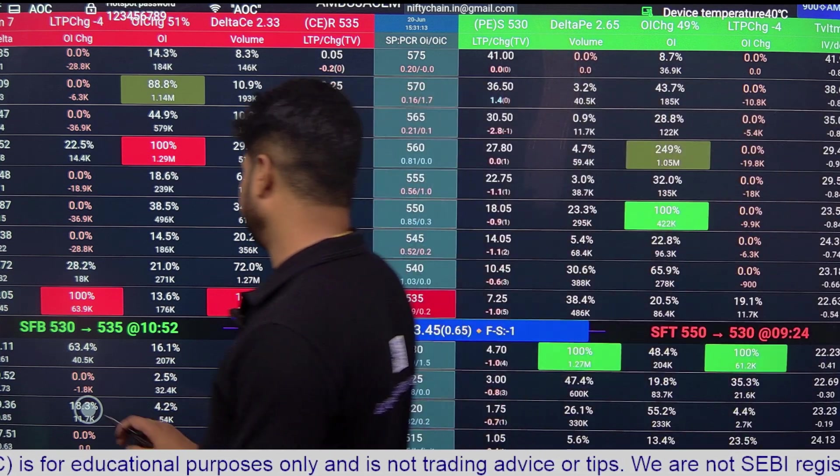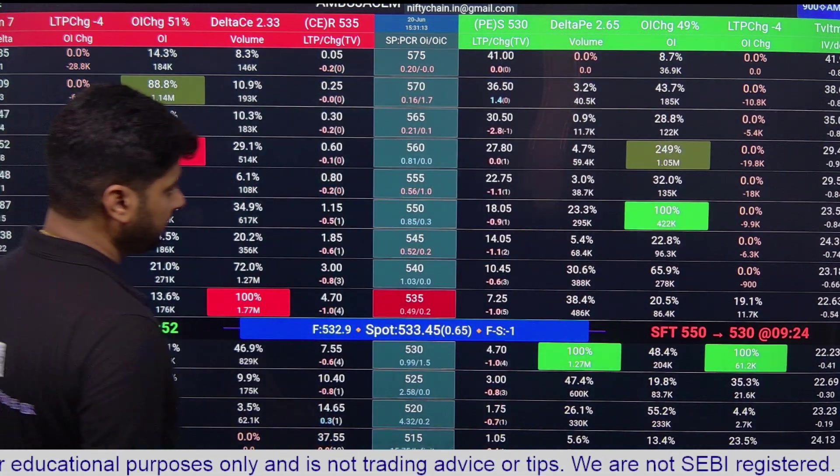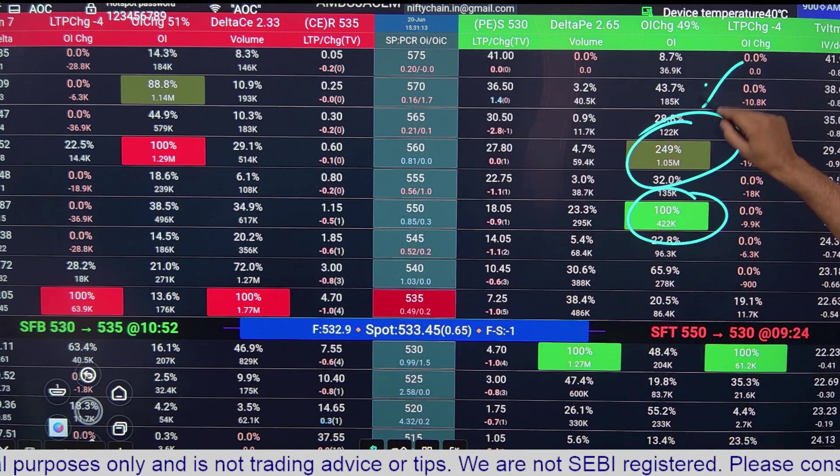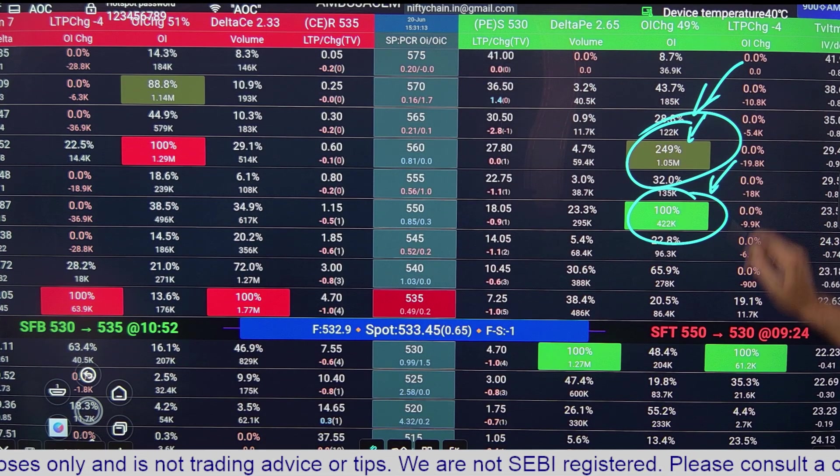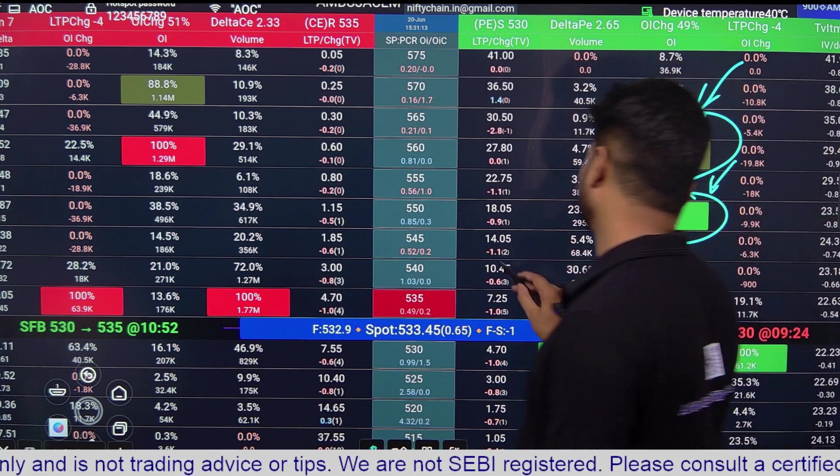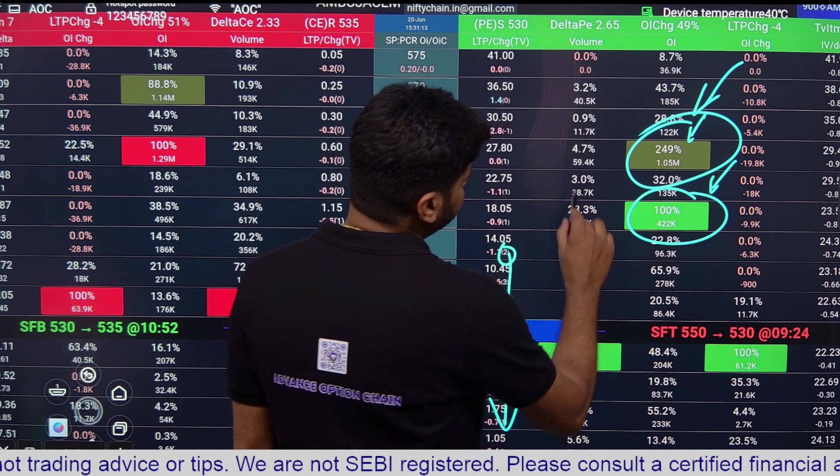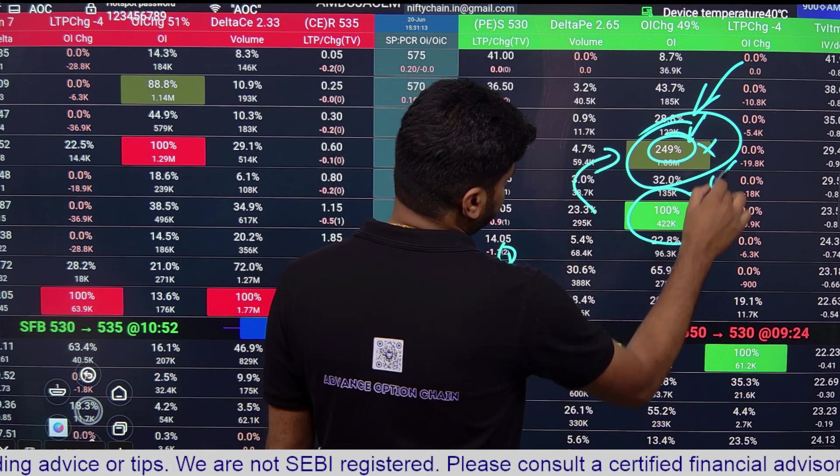One exception here, the OI is at 249. Why is that 249? Because we are looking at in-the-money. That is why we are not considering this strike price.